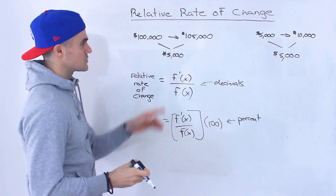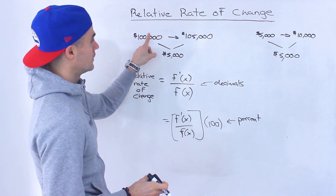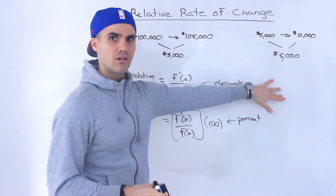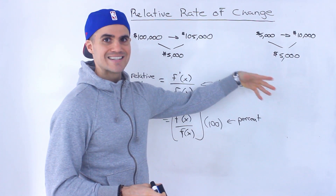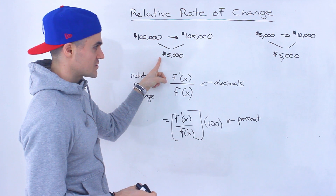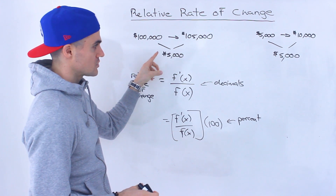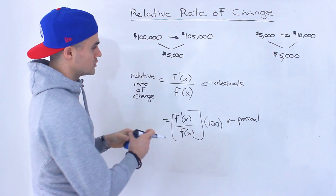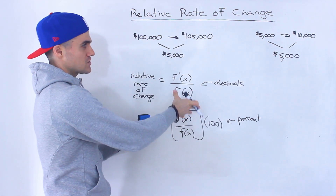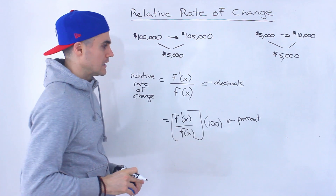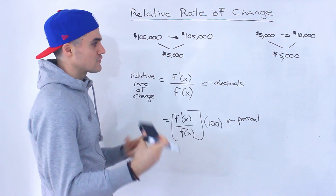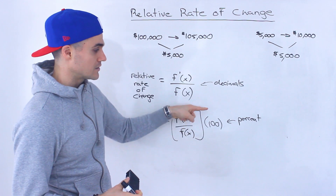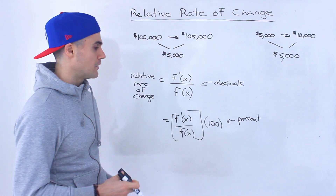The reason I want to mention that is because when you're dealing with actual scenarios, you can tell that 0.05 is a decimal rate of change, so you multiply by 100 to get the percentage. But when you're dealing with abstract functions with no scenario behind them, you can forget that you're working in decimals. So if you want the percent, you have to multiply by 100.